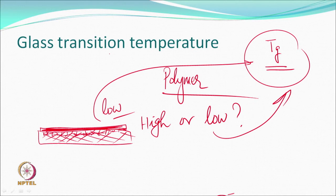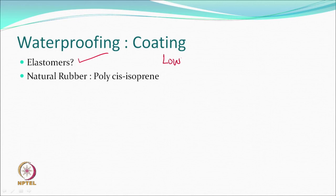Let us see what kind of polymers we may want to use. Elastomers definitely have a low glass transition temperature. Examples include natural rubber and spandex/lycra — they stretch easily and come back. If you can coat such elastomers on textiles, because they have a low glass transition temperature, the overall product will also be flexible.